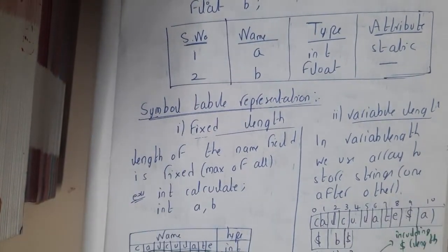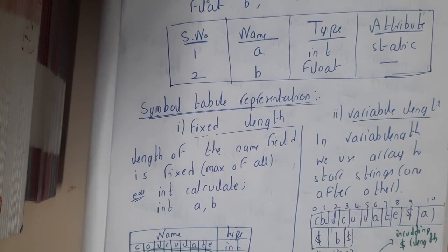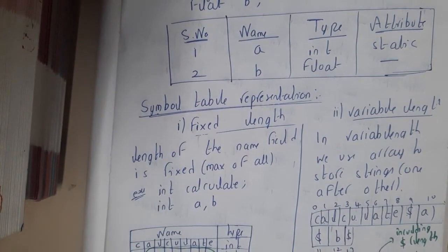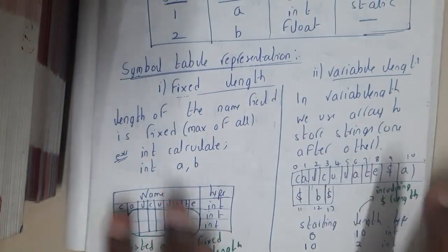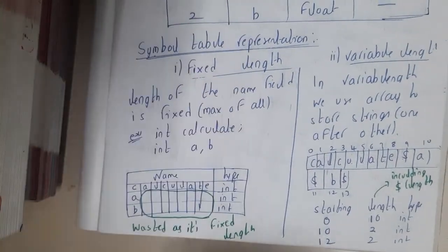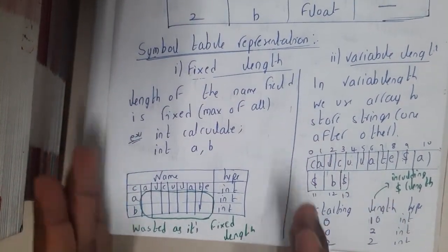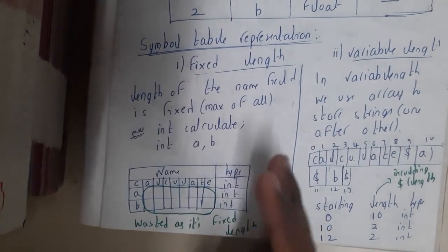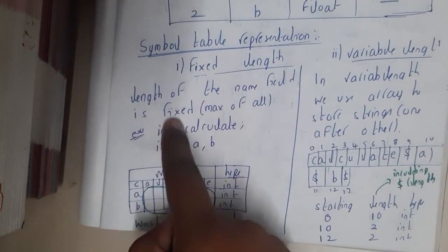It could be of fixed length or variable length. Fixed length means the length of the string name is fixed - the length of the name field is fixed maximum of all. For example, if you are creating int calculate and int a, b, observe that calculate occupies 9 characters.